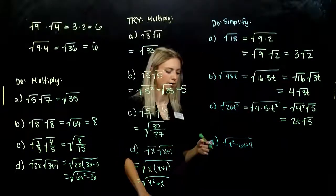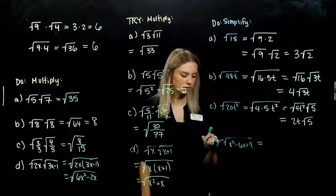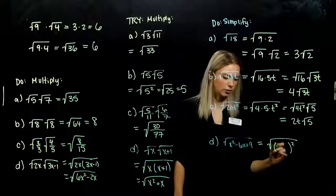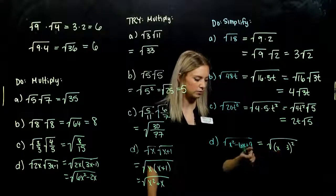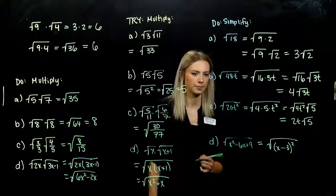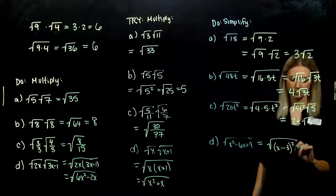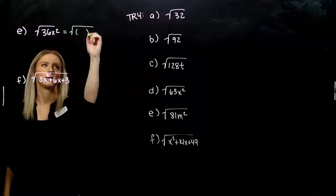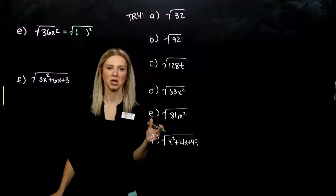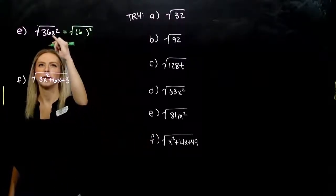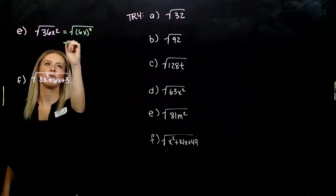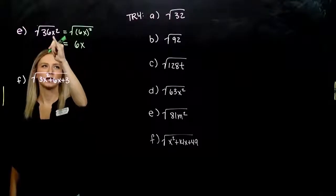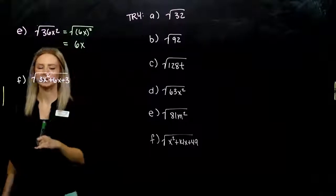For part D, we have a trinomial under the radical. Can we rewrite that radicand as some quantity squared? It is a perfect square trinomial — take the square root of the first term and the square root of the last term, with a negative sign in the middle. That evaluates to (x − 3). For part E, both 36 and x² are perfect squares, so we evaluate individually: √36 = 6 and √(x²) = x, giving 6x. We can verify by squaring: (6x)² returns us to the inside.